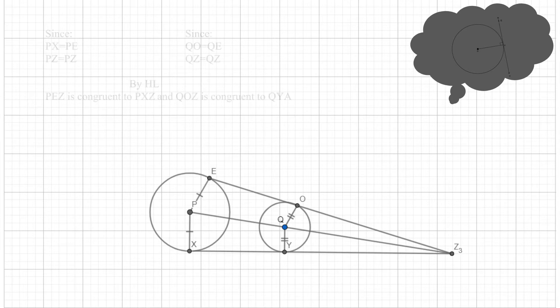Furthermore, by the hypotenuse leg congruence theorem, we see that we have pairs of congruent triangles, so the smallest angle of each triangle is also congruent. This means that both P and Q lie on the angle bisector of Z3, so P, Q, and Z3 must be collinear.